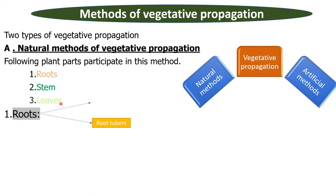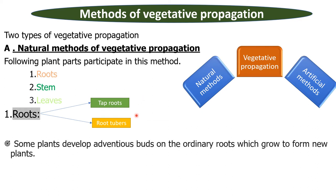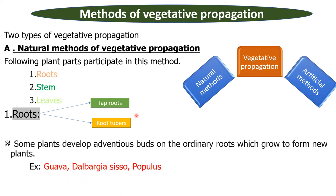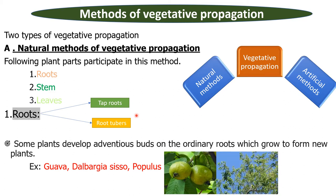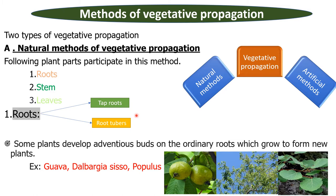We take the root part for our discussion. Here roots may be tap roots or root tubers. Some plants develop adventitious buds on the ordinary roots which grow to form new plants. The best examples are guava, dalbergia, sissoo, and prosopis. Here adventitious buds form on the ordinary roots of the plant, and from adventitious buds new plants can be raised naturally.